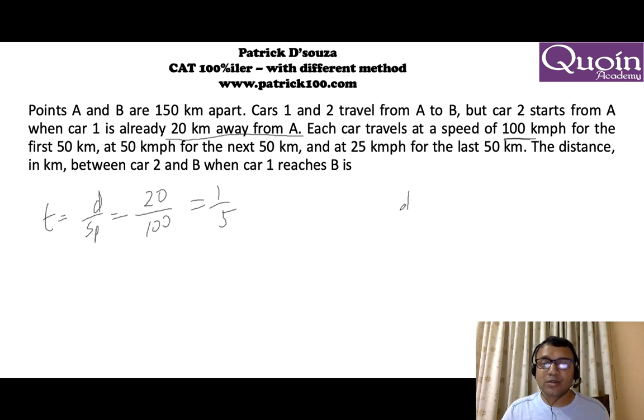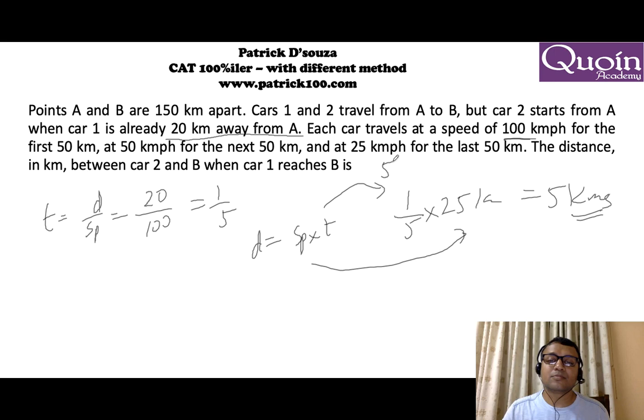So automatically car 2 will reach one-fifth of an hour late. One-fifth of 25 km per hour. Remember distance equals speed into time. Time is one-fifth hour, speed is 25 km per hour, the answer will be 5 km. If he starts one-fifth hour late, he will reach one-fifth hour behind, which comes to one-fifth of 25 km per hour, which is 5 km.